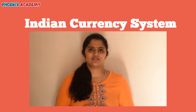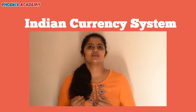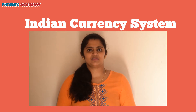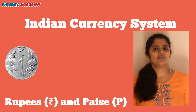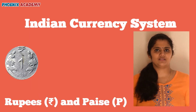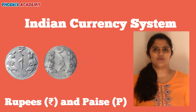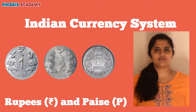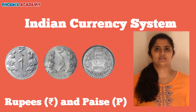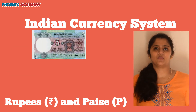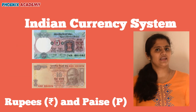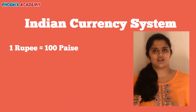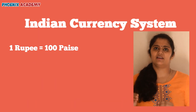Indian money is called rupees and paise. Let's see some coins and notes. This is a 1 rupee coin. This is a 2 rupee coin. And this is a 5 rupee coin. This is a 5 rupee note. This is a 10 rupee note. 1 rupee is equal to 100 paise.